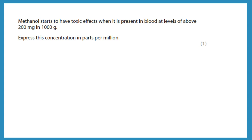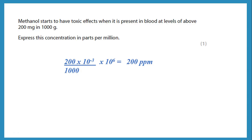Methanol starts to have toxic effects when present in blood at levels above 200 milligrams in 1000 grams. Express this in parts per million. We put the mass of methanol over the total mass times 10 to the 6. Both masses must be in the same units, so 200 milligrams is multiplied by 10 to the minus 3 to convert to grams, divided by 1000 grams, times 10 to the 6.